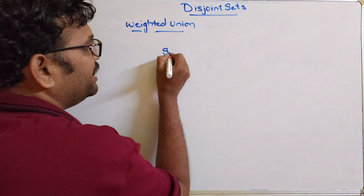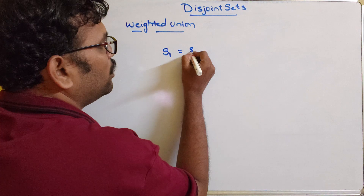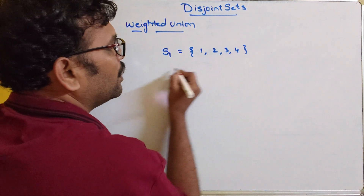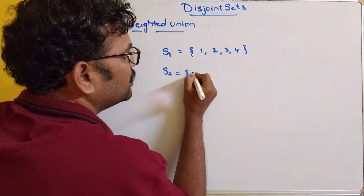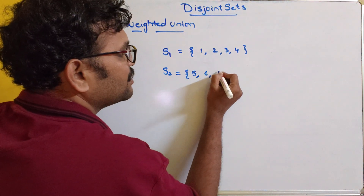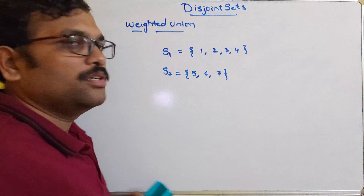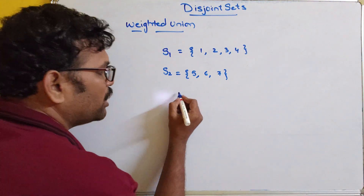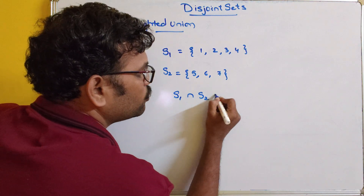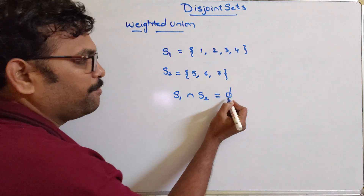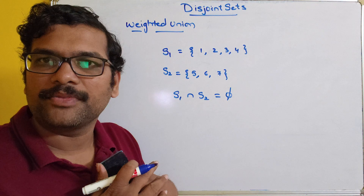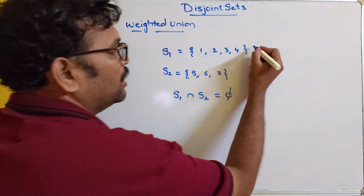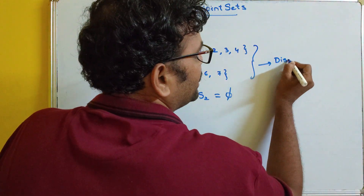For example, consider S1 = {1, 2, 3, 4} and S2 = {5, 6, 7}. There are no common elements between these two sets, so S1 intersection S2 is equal to the empty set. We can say S1 and S2 are disjoint sets.